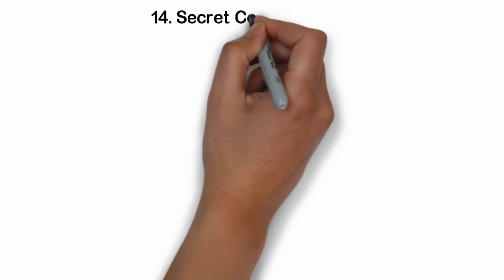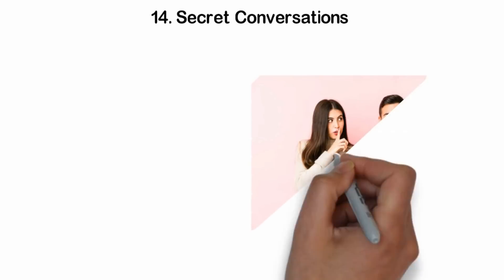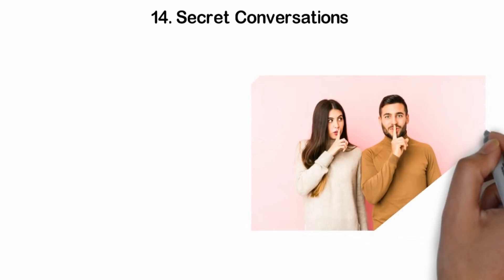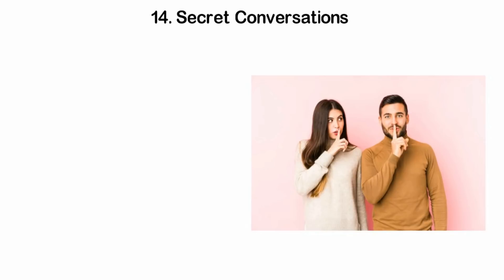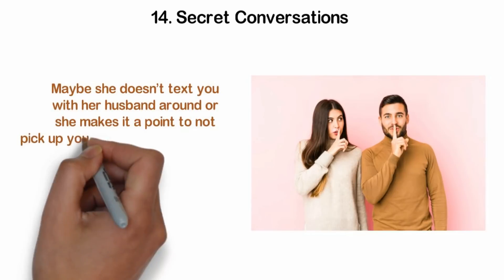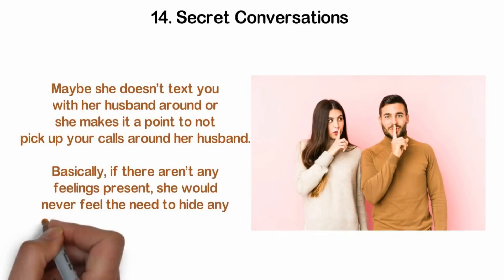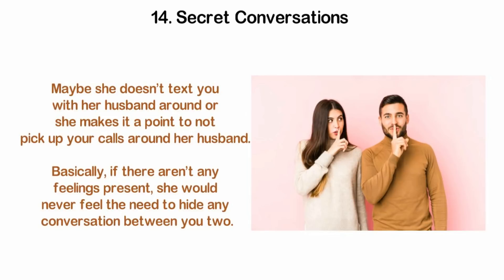14. Secret conversations. For some reason, the conversations between you feel like a secret from others. Except when you are with your friends' circle, or if you are co-workers in an office, if the conversations with you feel secretive, then something's up. It is as if she is trying to hide you away from her husband. Maybe she doesn't text you with her husband around, or she makes it a point to not pick up your calls around her husband. Basically, if there aren't any feelings present, she would never feel the need to hide any conversation between you two.